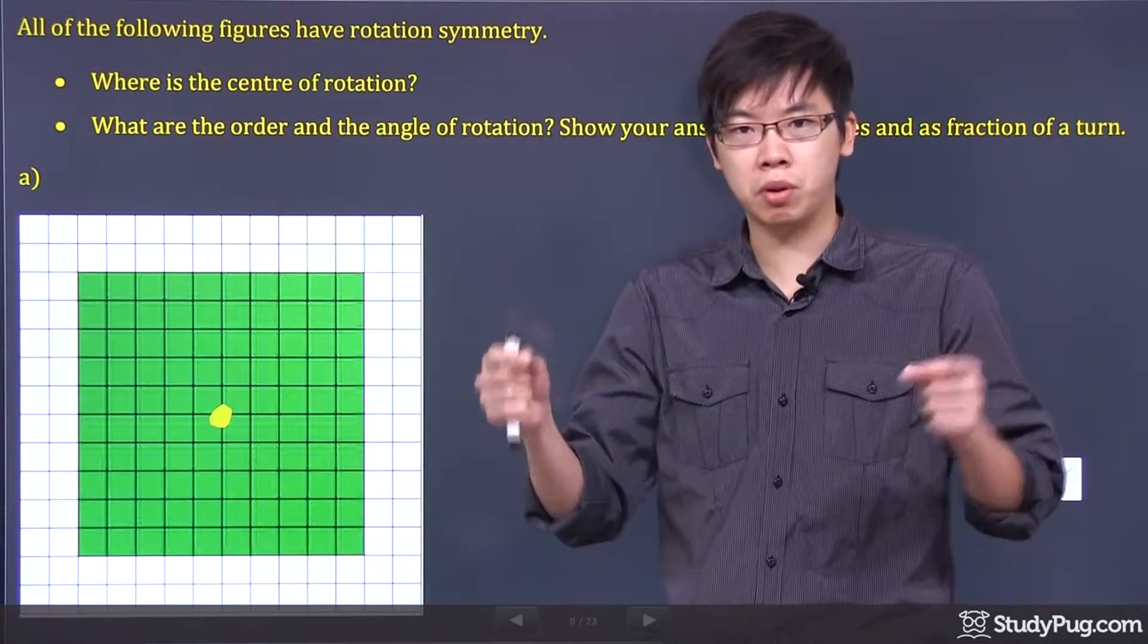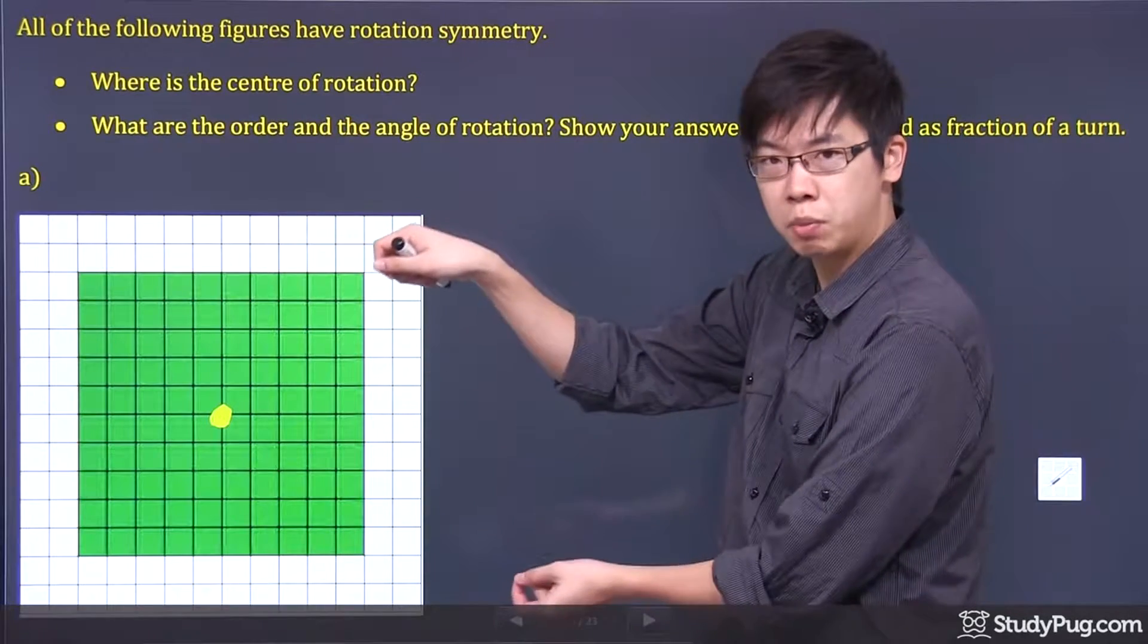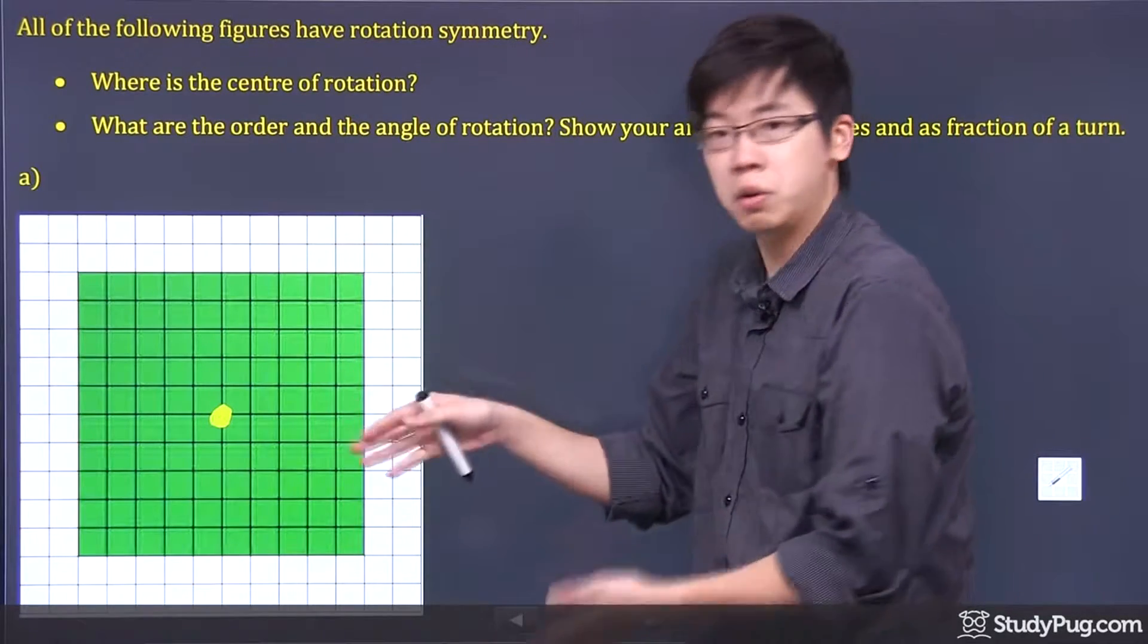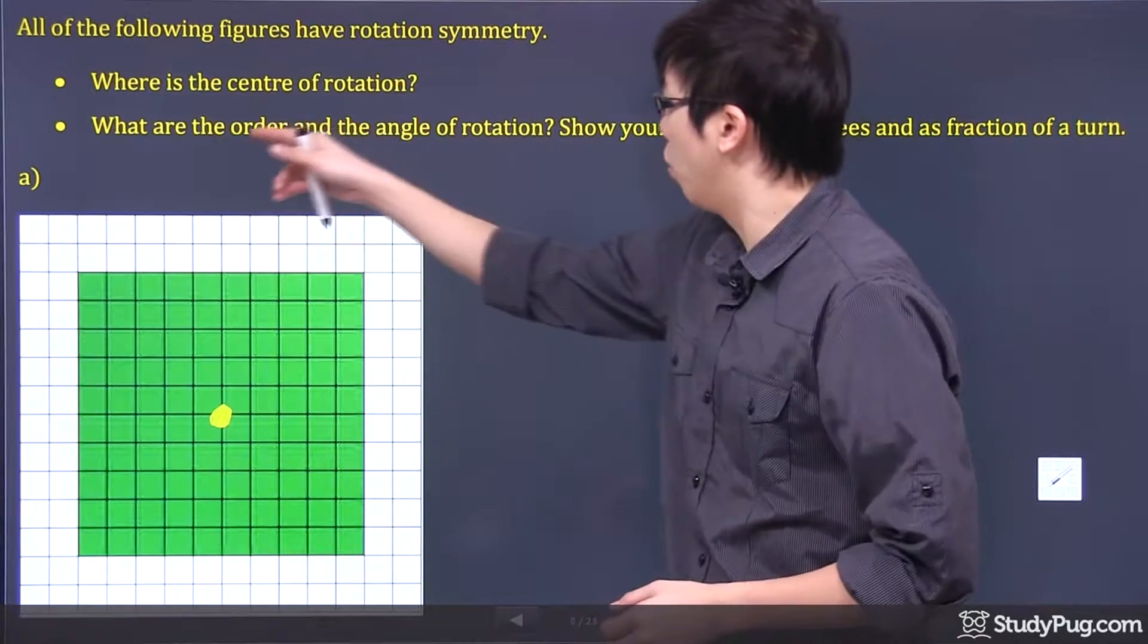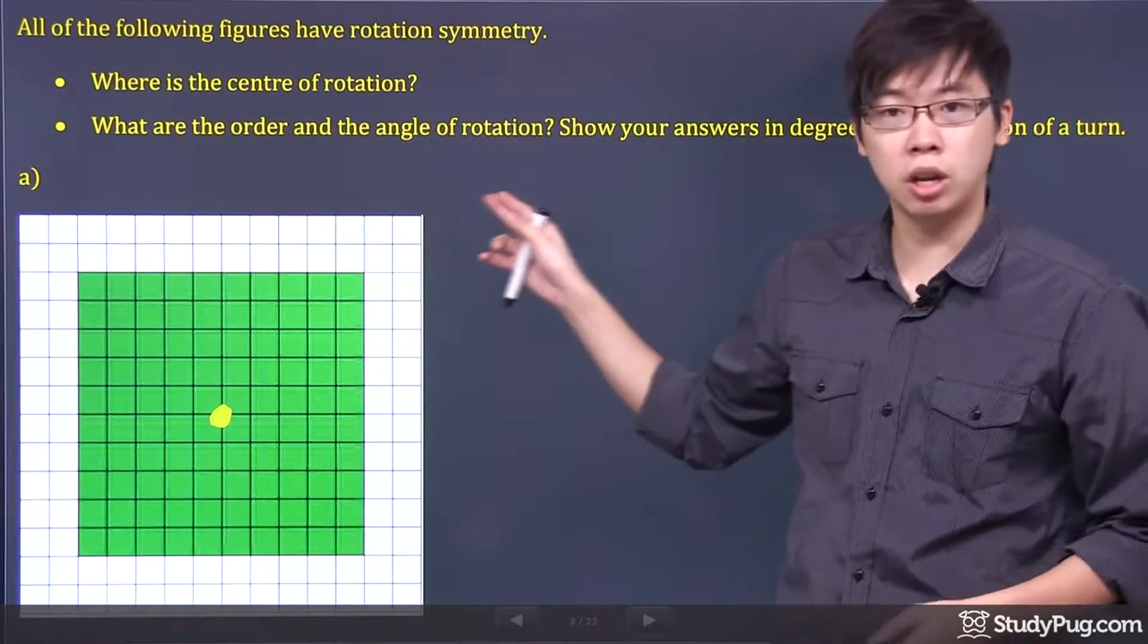So if you imagine that if you have a piece of paper with this size, and if you rotate that piece of paper around, you will still get the same image. So, what are the order and the angle of rotation?